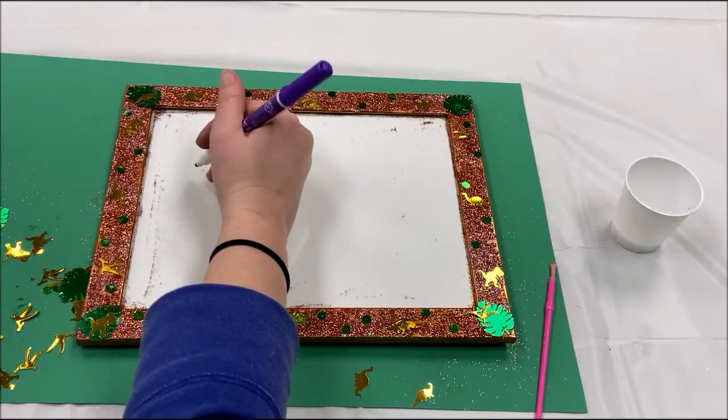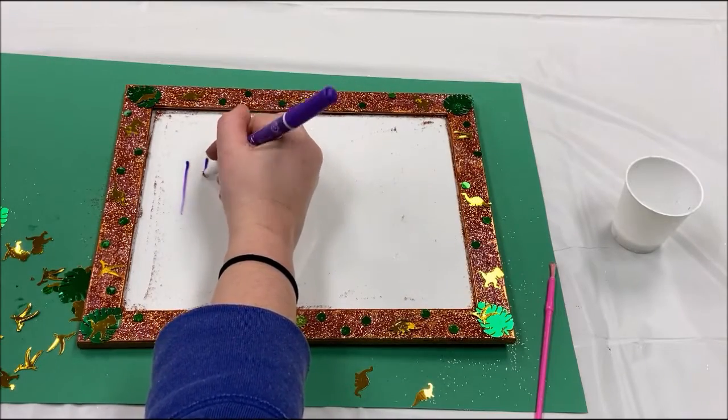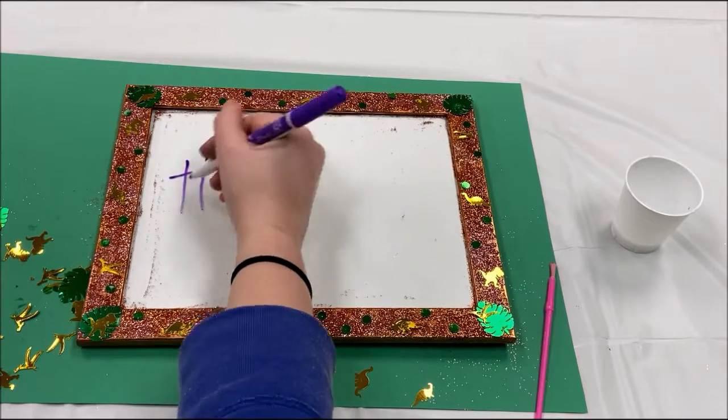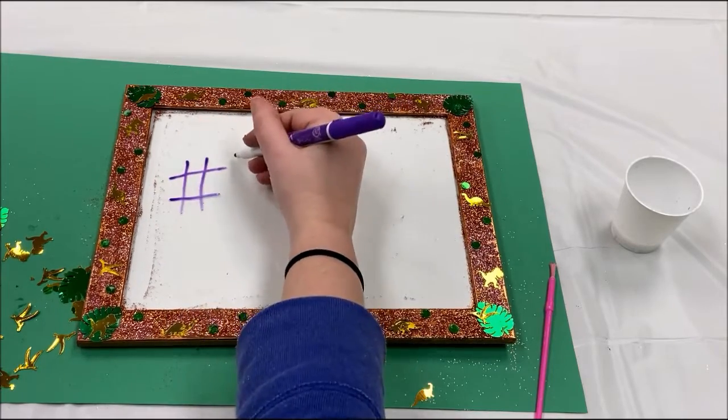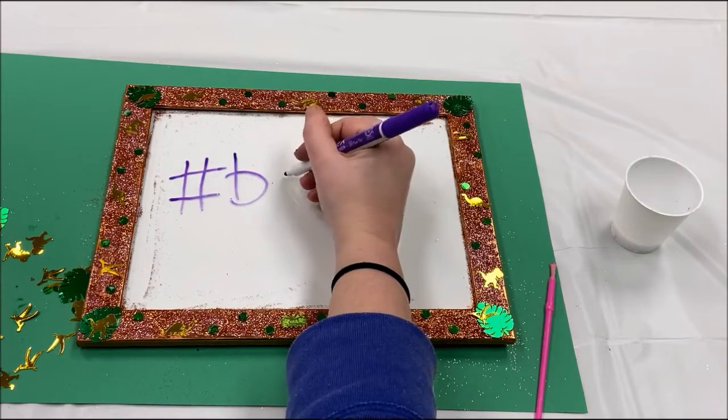And I went ahead and finished off camera because it was taking a little while. And as you can see, it turns into a dry erase board. But here's what my final product looked like. I just put sequins all around. And look at how cool that looks.